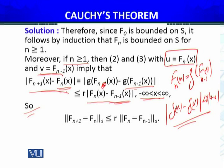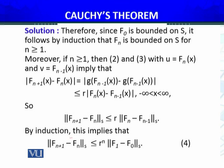Since this holds for all x, I can take the supremum over x belonging to S on both sides. This gives the inequality in norm form: ‖f_{n+1} - f_n‖ ≤ R·‖f_n - f_{n-1}‖, where the norm is defined as the supremum over S. By induction, applying this repeatedly: ‖f_{n+1} - f_n‖ ≤ R^n·‖f_1 - f_0‖. This is our fourth key inequality, which holds for any n.